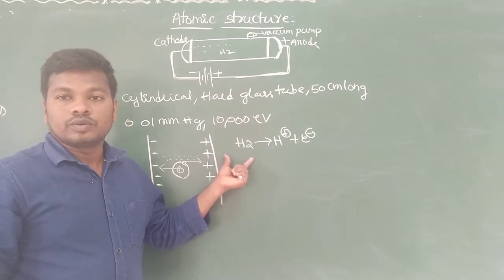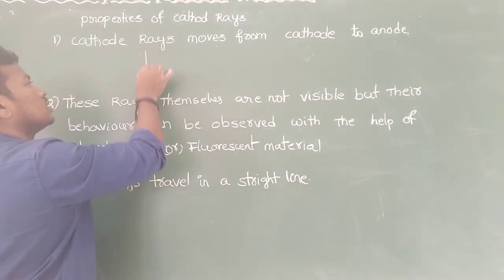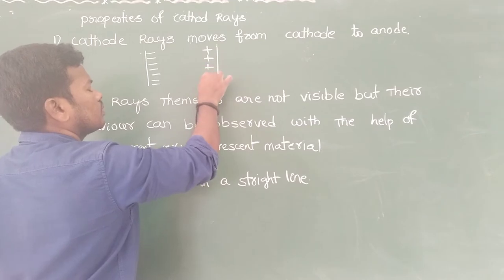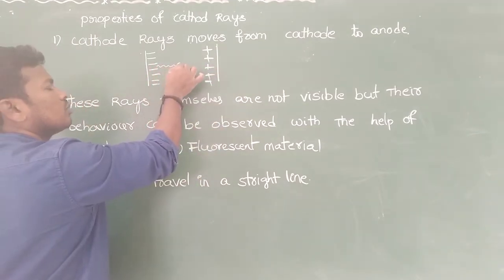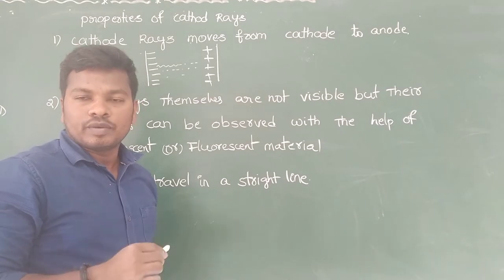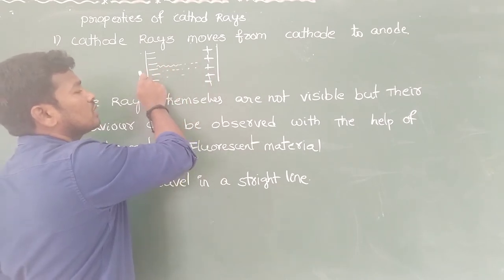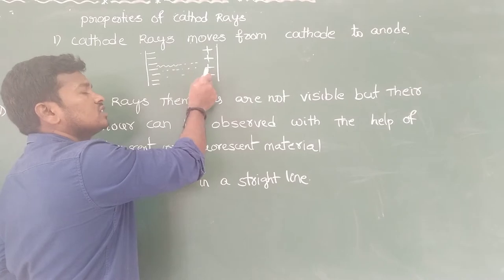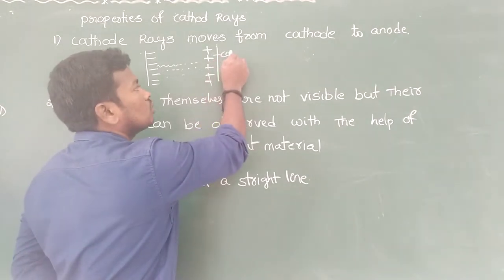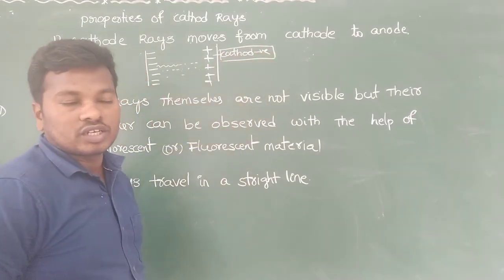Now we can see the properties of cathode rays. First, cathode rays move from the cathode to the anode. We know that like charges repel and opposite charges attract each other. The rays moving from cathode toward the anode must have the opposite charge, which confirms that cathode rays carry negatively charged particles.